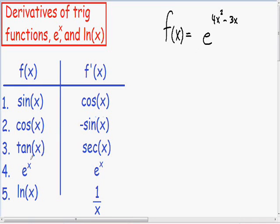If you look at number 4 in our table, if we have the function e to the x, the derivative of that function is also e to the x. So correspondingly, since we have the function f of x is e to the 4x squared minus 3x, the derivative is also going to be e to the 4x squared minus 3x. And the only difference is,